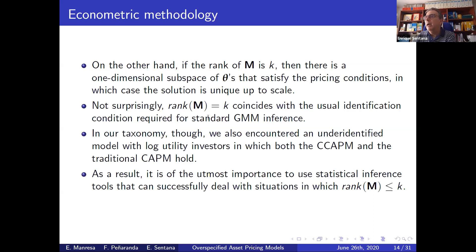This is a very simple linear-in-parameters GMM setup. The condition on the Jacobian, which is constant, is just that the rank of this matrix has the right rank. In the previous discussion of textbook examples, we also encountered one example in which we had two different models holding simultaneously — the consumption CAPM and the traditional CAPM — resulting in lack of identification. For that reason, we want a way of handling the asset pricing restrictions that explicitly allows for under-identification.